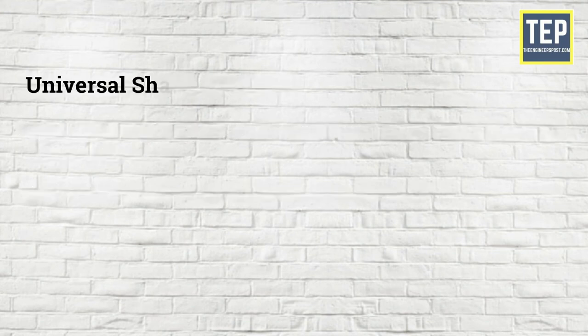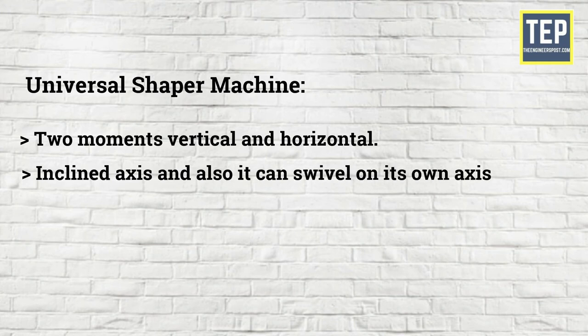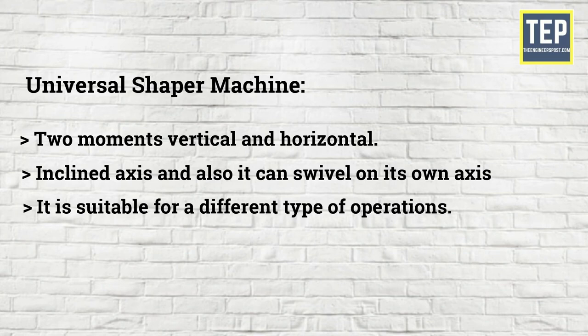Universal Shaper Machine: In this types of Shaper Machines there are two movements, vertical and horizontal. The table can be moving in an inclined axis and also it can swivel on its own axis. Universal Shaper is suitable for a different type of operations. It is commonly using in the tool room works.